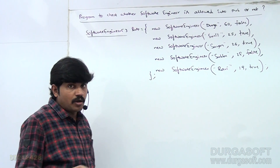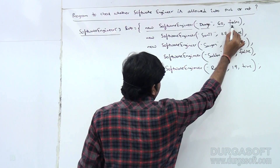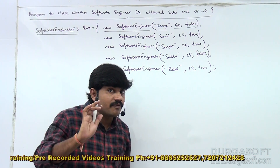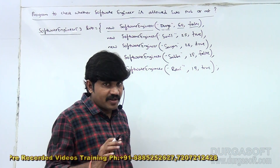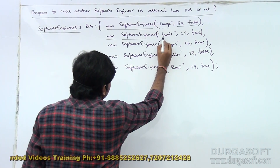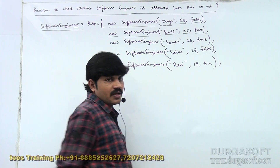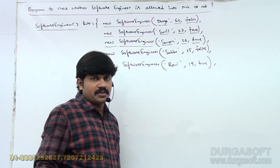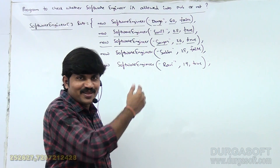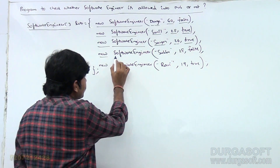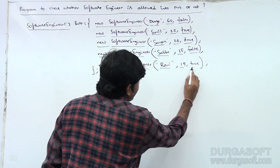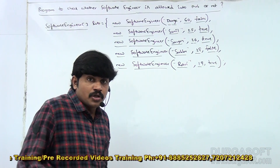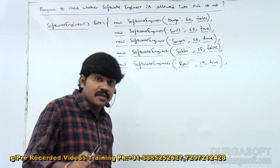I am creating five software engineer objects: new SoftwareEngineer('Durga', 60, false); new SoftwareEngineer('Sunil', 25, true); new SoftwareEngineer('Sion', 26, true); new SoftwareEngineer('Subbu', 28, false); new SoftwareEngineer('Ravi', 19, true). These are the five software engineer objects in the array.